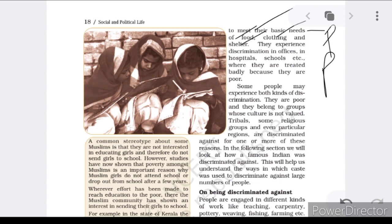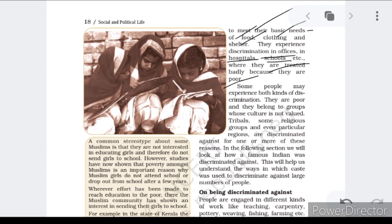Being poor or rich is not part of diversity but is because of inequality occurring in our society. The experience of discrimination happens in offices, hospitals, schools, and various other sectors — they are treated badly because they are poor. A child who is poor is not allowed to sit along with classmates. This is not part of diversity but because of inequality which exists in society. Some people may experience both kinds of discrimination: they are poor and they belong to groups whose culture is not valued.